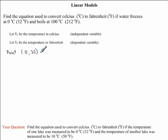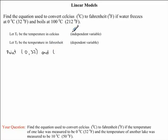So this is one point. We also have another point: when we have 100 degrees Celsius, we know this is equal to 212 degrees Fahrenheit. So our independent variable is 100, and our dependent variable is 212.